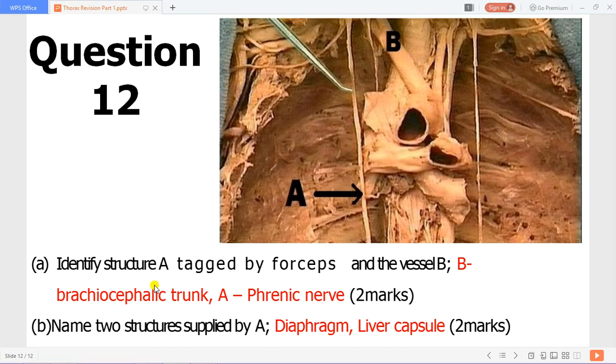You can appreciate the structure tagged by the forceps labeled A - this is the phrenic nerve. The vessel labeled B is the brachiocephalic trunk. This is the arc of the aorta, the brachiocephalic trunk which divides into the right subclavian and the right common carotid. This is the left common carotid, the left subclavian, and here you have the trachea.